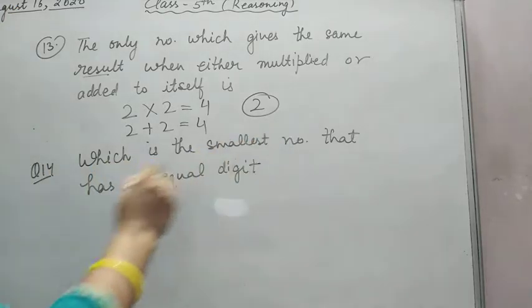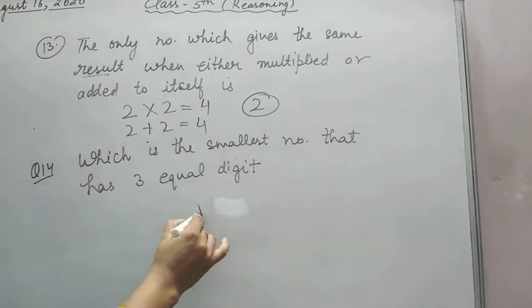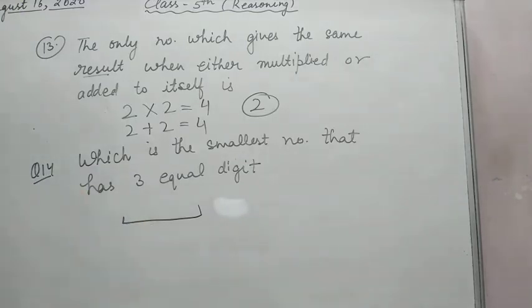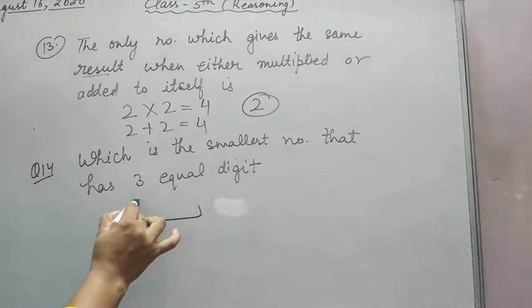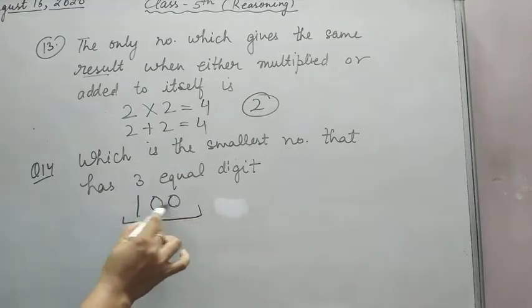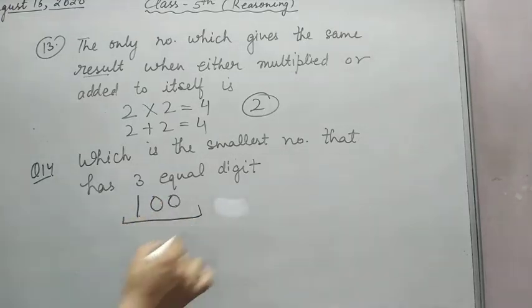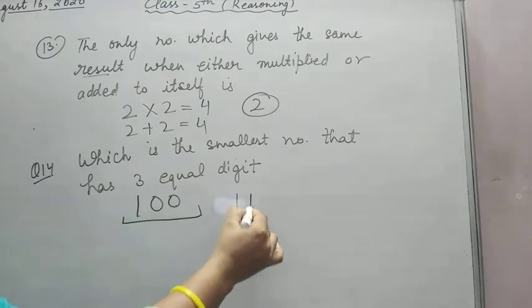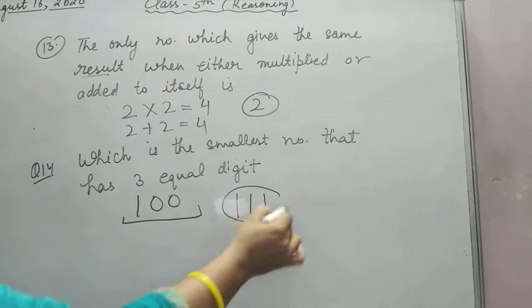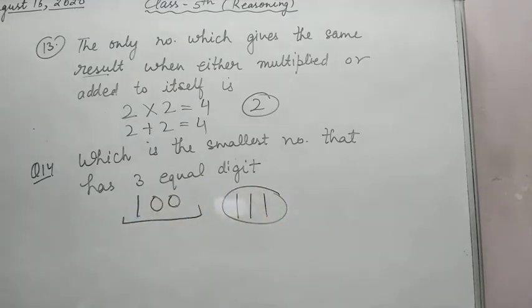Now come to question number 14: Which is the smallest number that has equal digits? Smallest number, three digits with equal digits. So equal digits, smallest will be 111. This is your smallest three-digit number which has three equal digits.